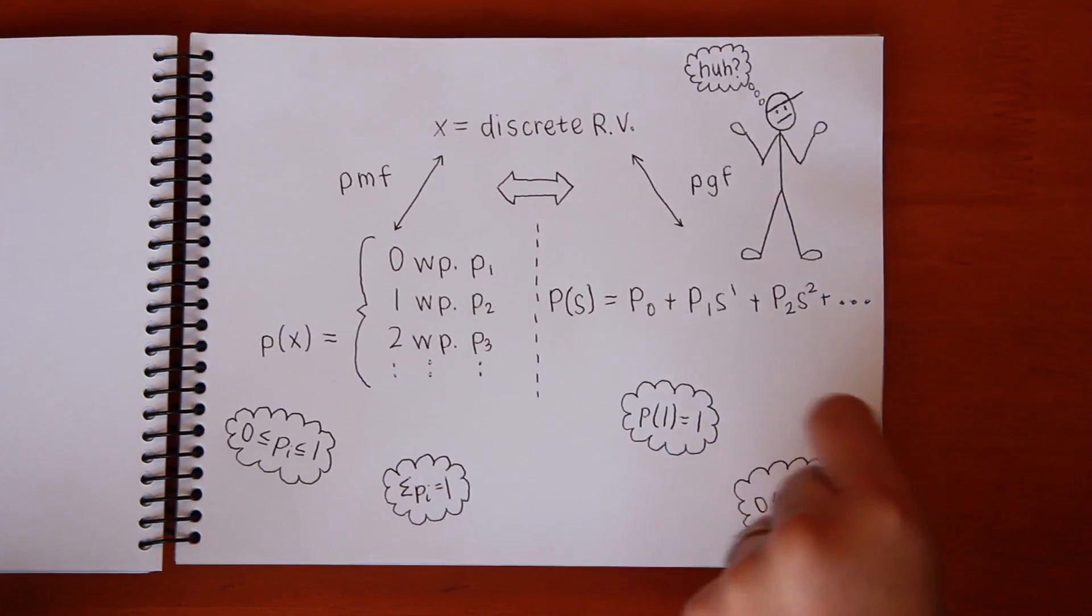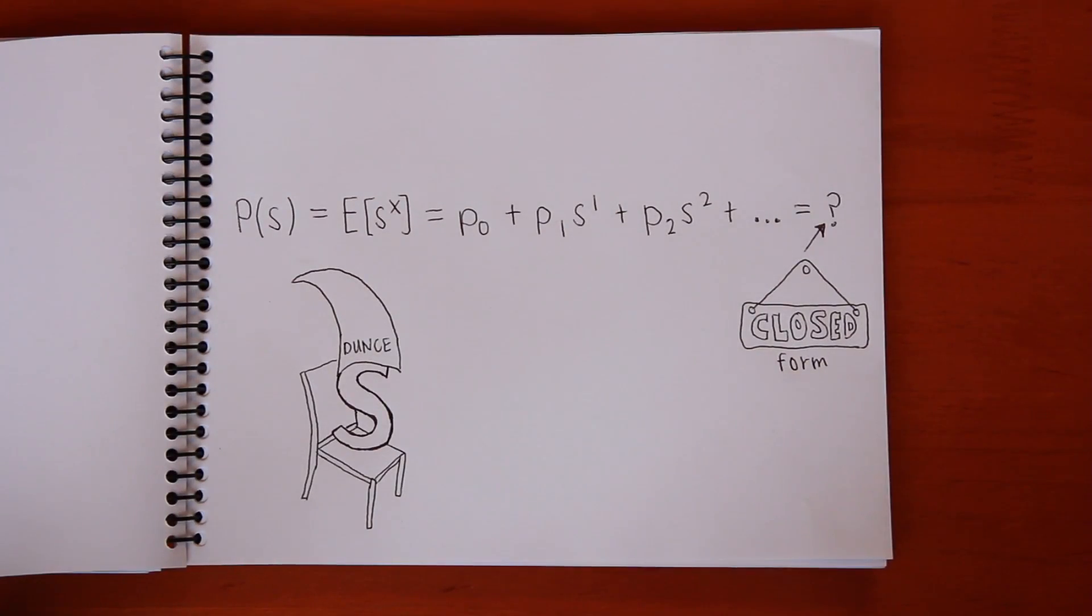By definition, the probability generating function is the expected value of S^X, where S is a dummy variable that will eventually be set to either 0 or 1. From this definition, the PGF in expanded form is simply the sum of the probabilities that X equals i, times S to the power i.